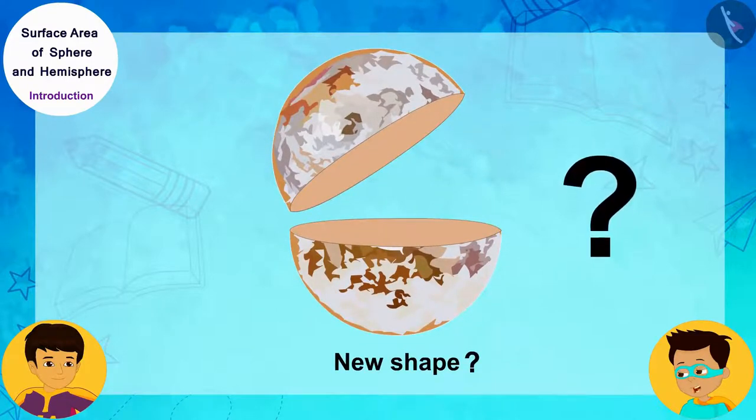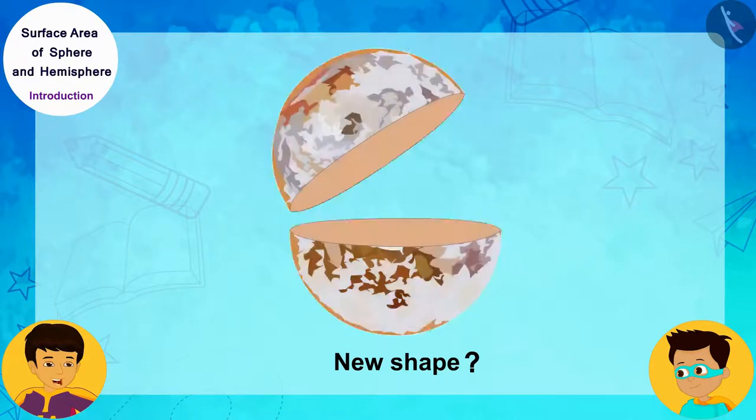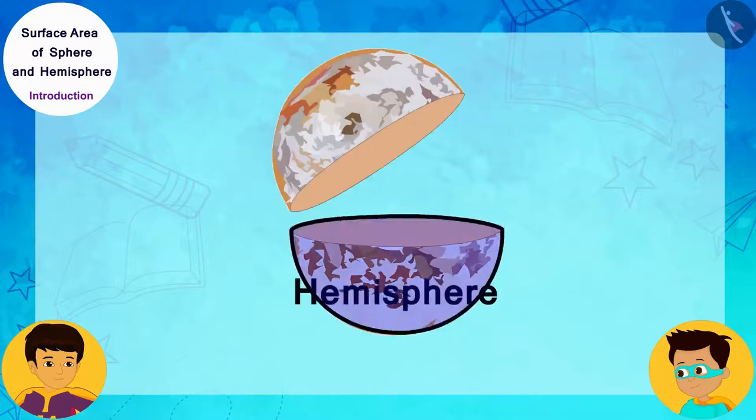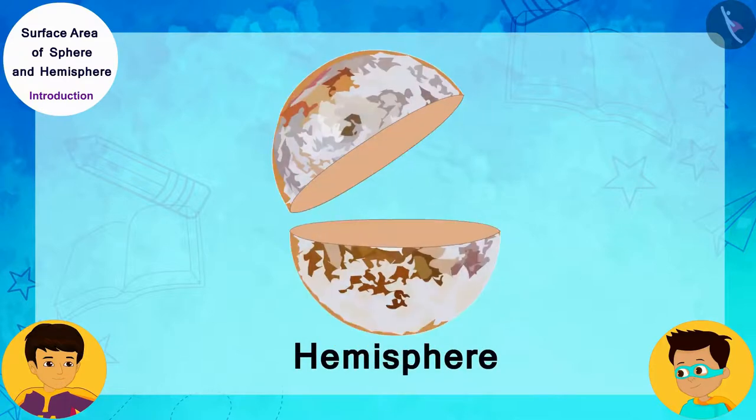Thomas, if we take any solid sphere and cut it into two parts by passing a plane through its center, then it will be divided into two equal parts. And each half of this is called a hemisphere.